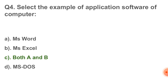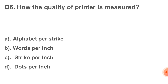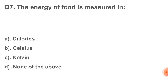Next question: which of the following is also called a translator? Correct answer is option number D, that is language processor. Next question: how is the quality of a printer measured? Correct answer is option number D, that is dots per inch.